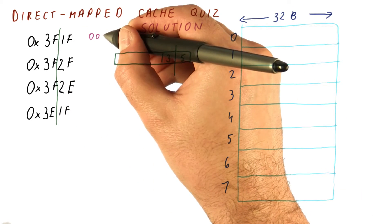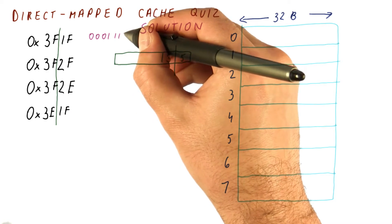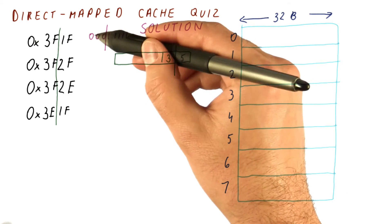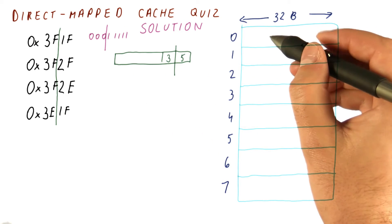1F is 00011111. Five bits are the offset, and 000 is the index, so this goes here.